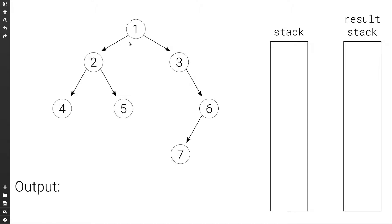We begin with the root node one, and we will add it to the first stack. Then we go to the stack and we set the current node to the top of the stack. So the top of the stack is one, so we set this as current. We pop it, and we add it to the result stack. Then we check does it have a left child, and if it does, we're going to push it to the first stack. Then we check does it have a right child, and if it does, we push it again to the first stack.